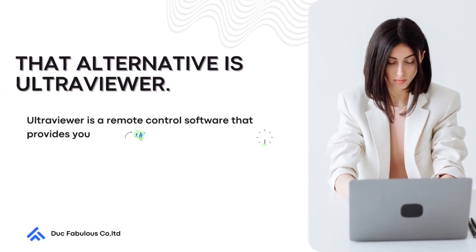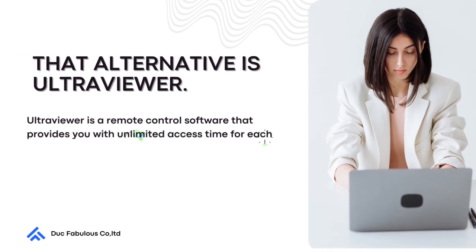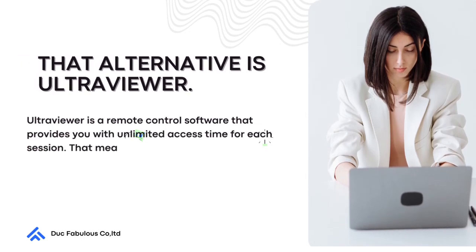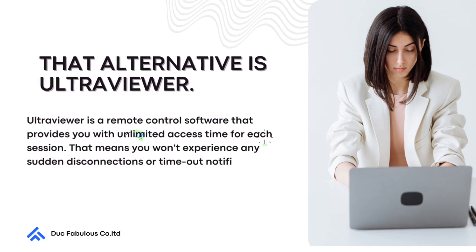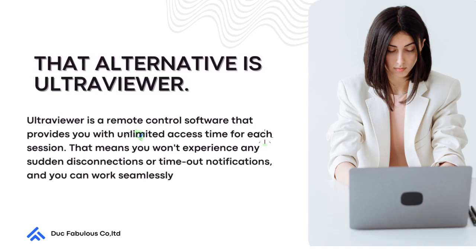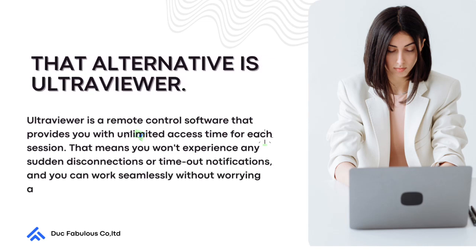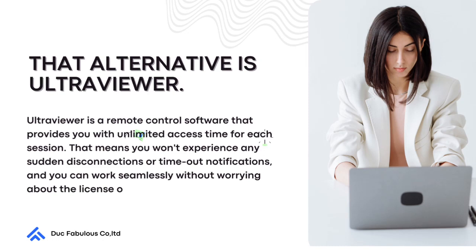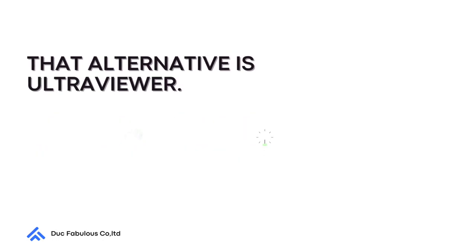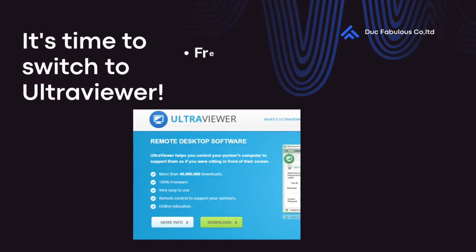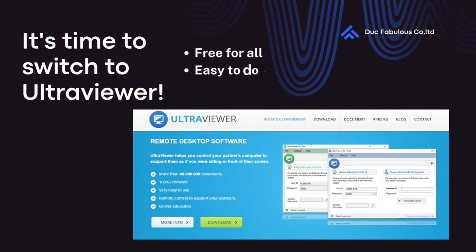UltraViewer is a remote control software that provides you with unlimited access time for each session. That means you won't experience any sudden disconnections or timeout notifications, and you can work seamlessly without worrying about the license or the time limit. Plus, UltraViewer is completely free for both personal and commercial use. You won't have to pay a high price for a license like with TeamViewer.